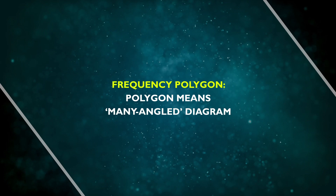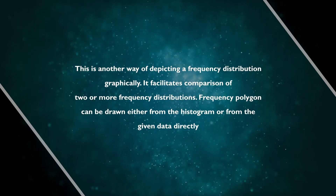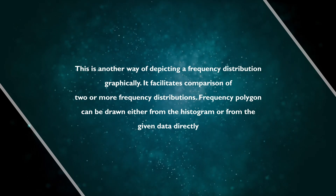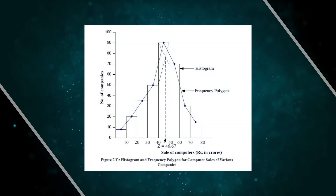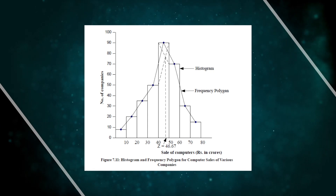Another type of graphical presentation is the frequency polygon. 'Polygon' means a many-angled diagram. This is another way of depicting a frequency distribution graphically. It facilitates comparison of two or more frequency distributions. A frequency polygon can be drawn either from the histogram or from the given data directly. First we plot the histogram, then take the midpoint of each bar, and by connecting those midpoints we plot the frequency polygon.